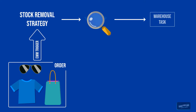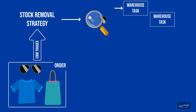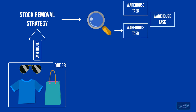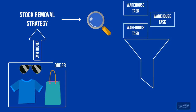If those items are found, the EWM creates the picking warehouse tasks. When those tasks are created, they run through a big hopper, and this hopper combines and bundles those tasks into warehouse orders. That is the basic principle behind warehouse orders.